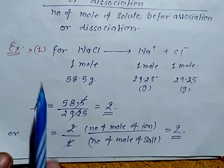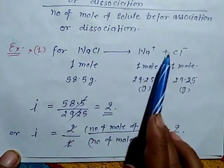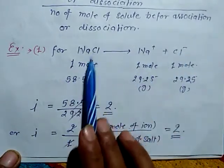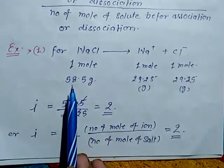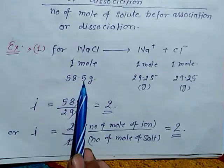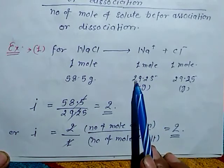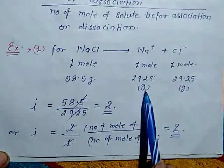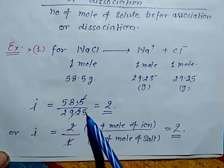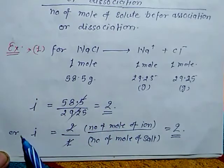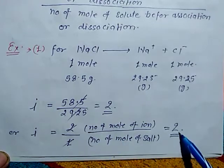Taking the example of NaCl: NaCl → Na⁺ + Cl⁻. One mole of reactant gives two moles of ions. The molecular mass of NaCl is 58.5 g, but after ionization the abnormal molar mass is 29.25 g. So the Van't Hoff factor i = 58.5 / 29.25 = 2, or i = 2/1 according to moles. The Van't Hoff factor is 2.